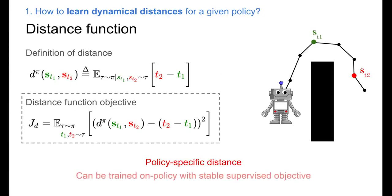This allows us to use a simple supervised learning objective to regress the distance function to the samples gathered by the policy. Although, in principle, one could use Q-learning-style methods to learn value functions for shortest path policies directly.